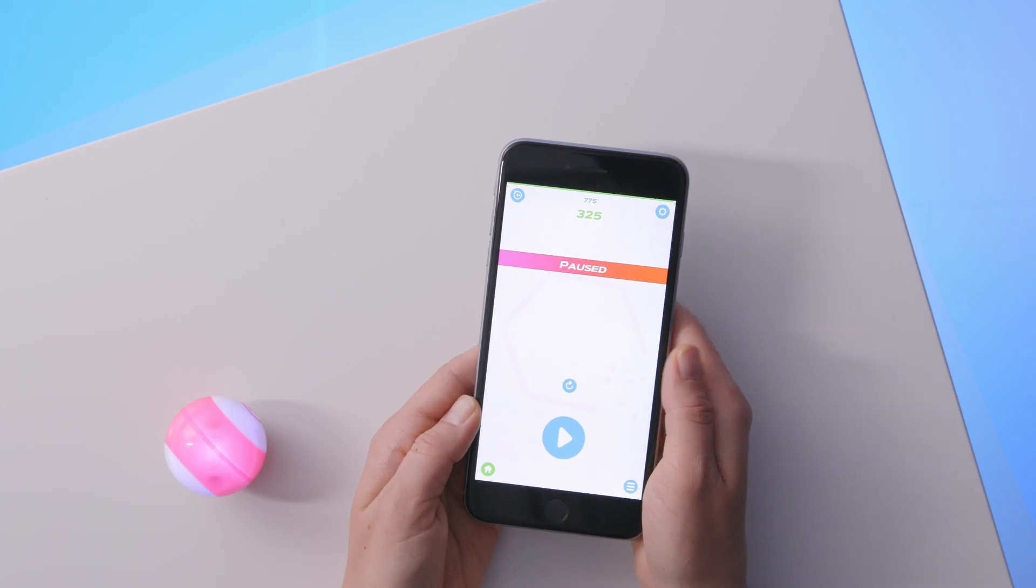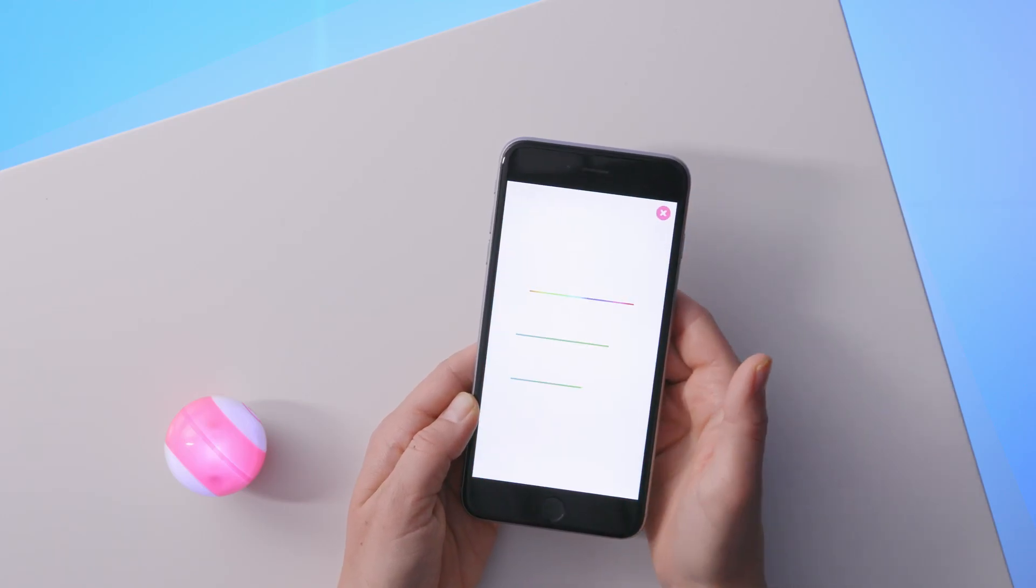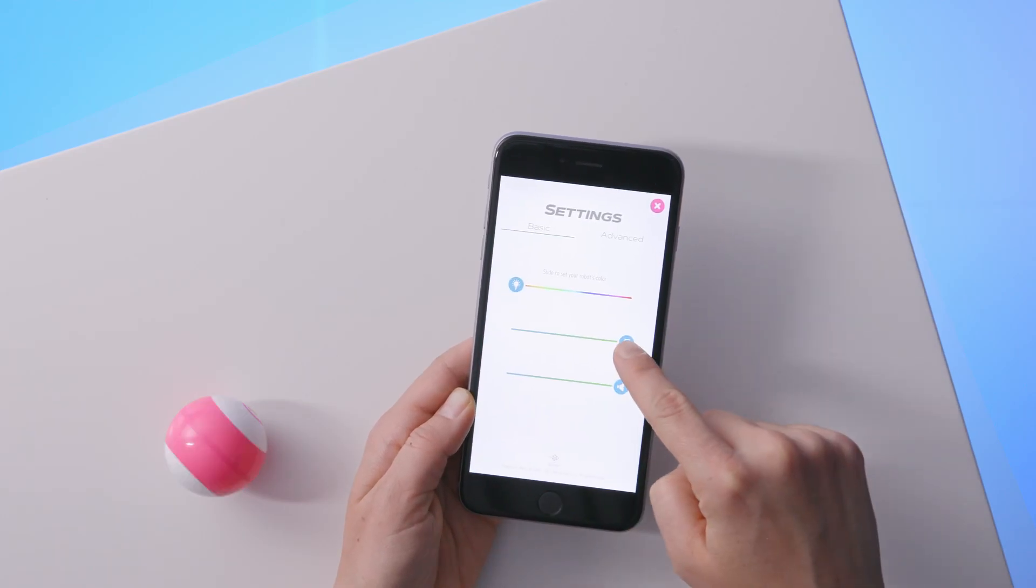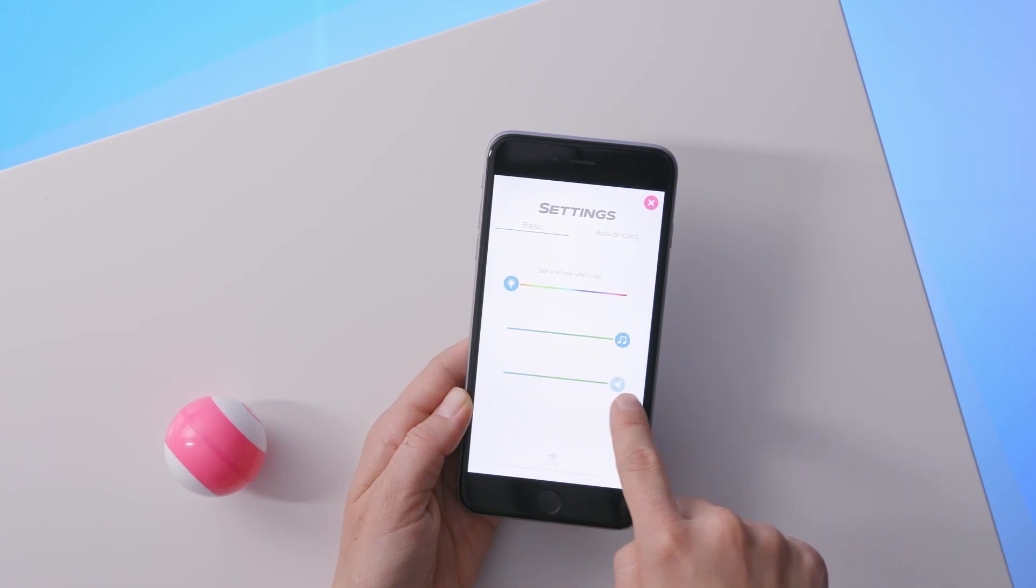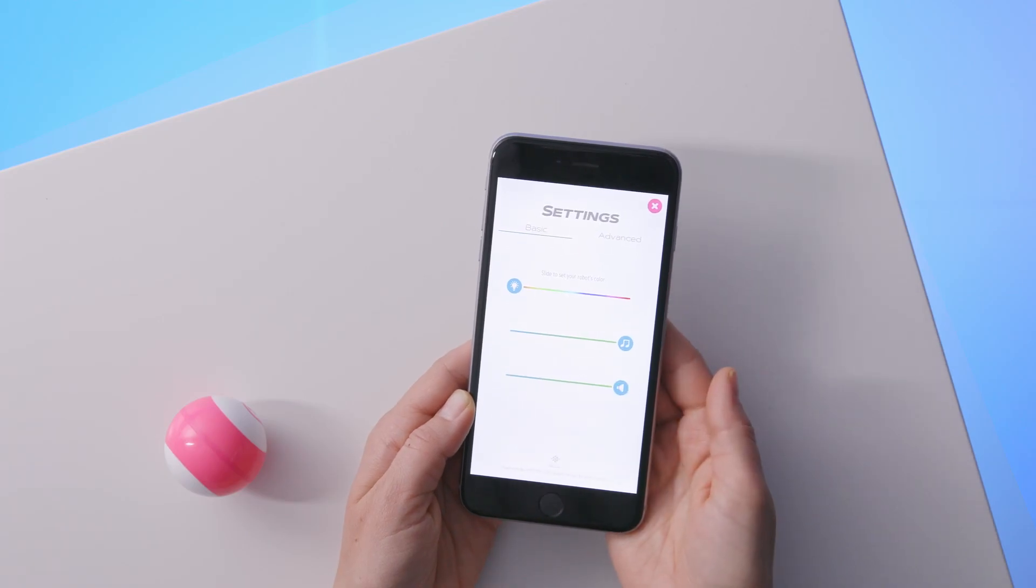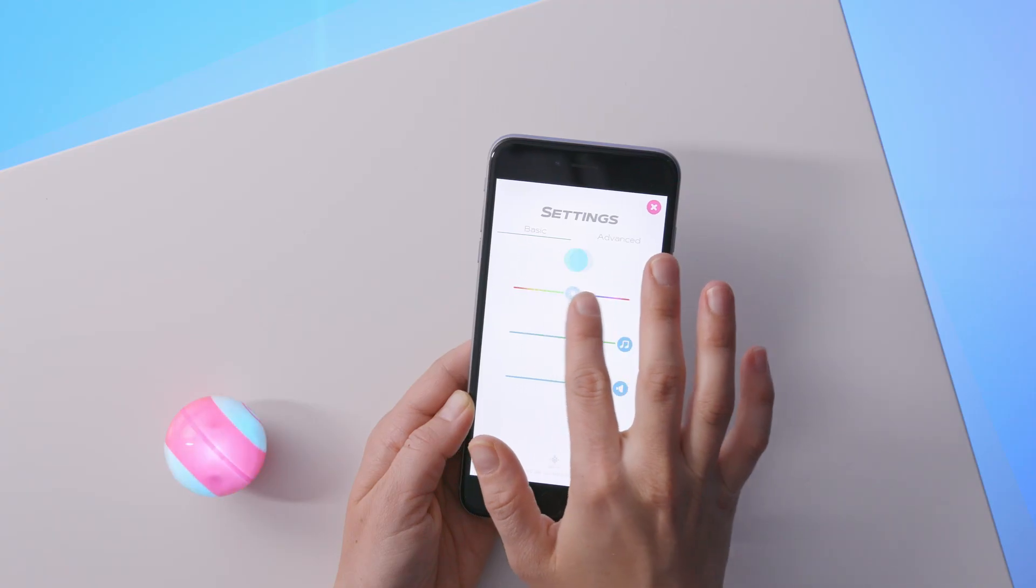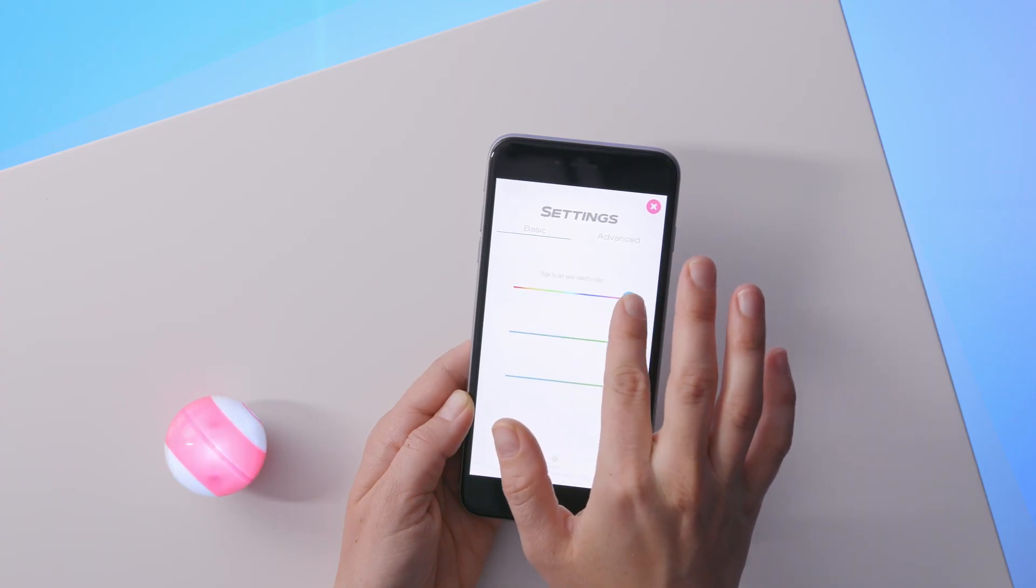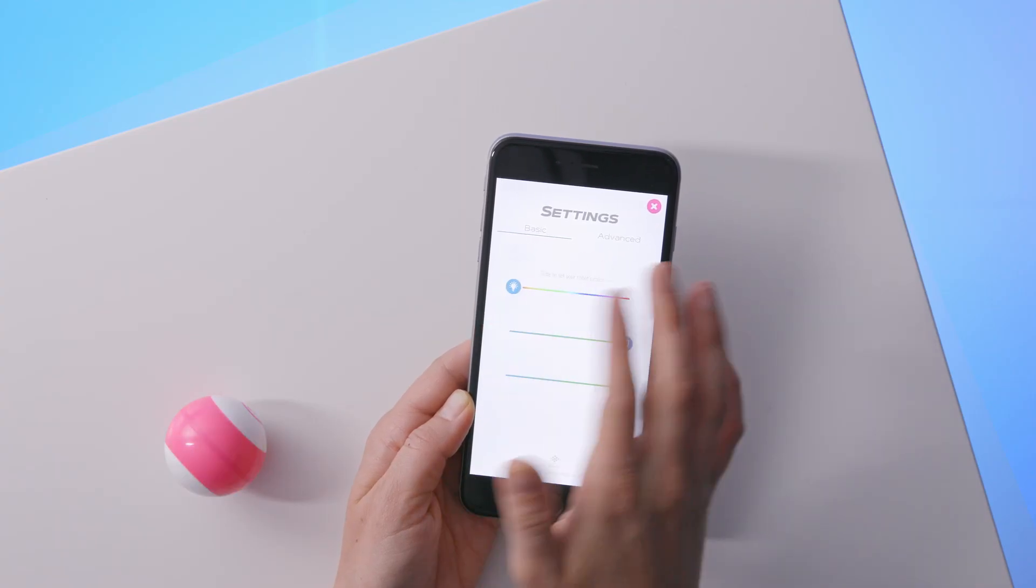General settings are available via the icon at the top right of the screen. These include volume sliders for sound effects and music, as well as a color selection slider at the top. This allows you to choose the color of the light inside your mini. Slide it all the way to the right for a white light, or all the way to the left to turn off the light.